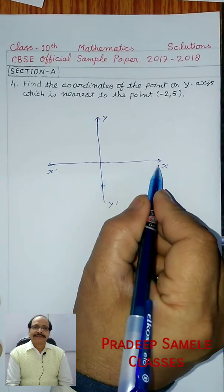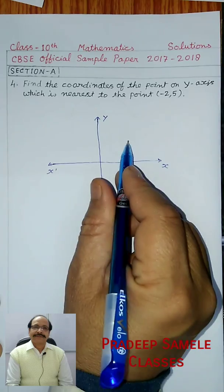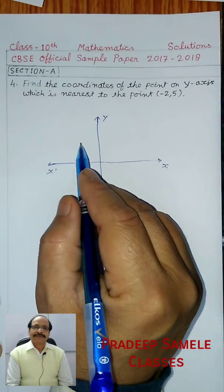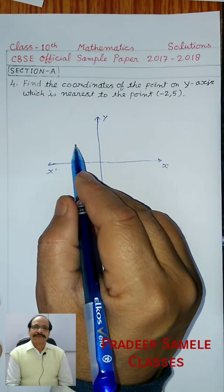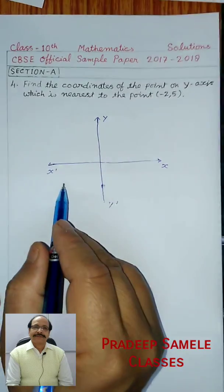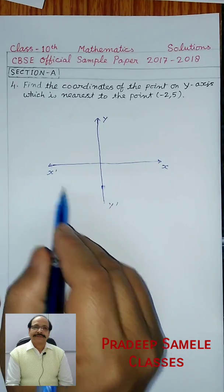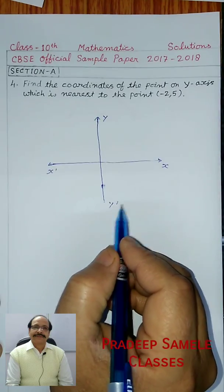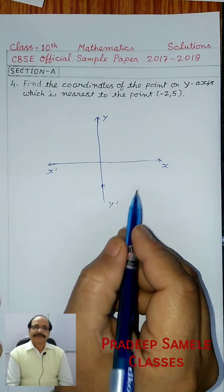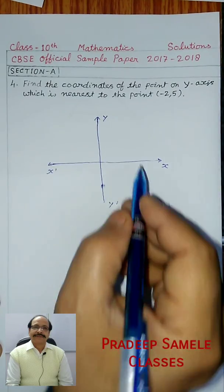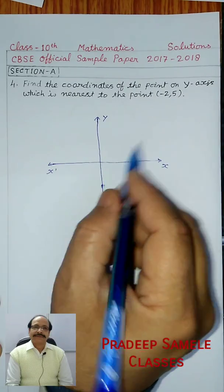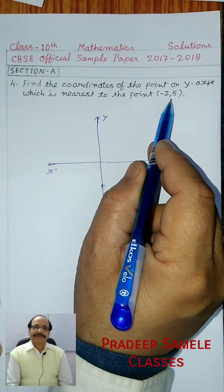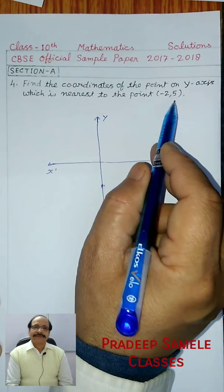So in this, the positive side remains here. This is the first quadrant: plus-plus. This is the second quadrant: minus-plus. Third quadrant: minus-minus, and fourth quadrant: plus-minus. So there are four quadrants. So this is the point (-2, 5).